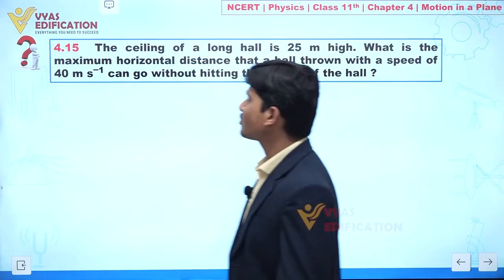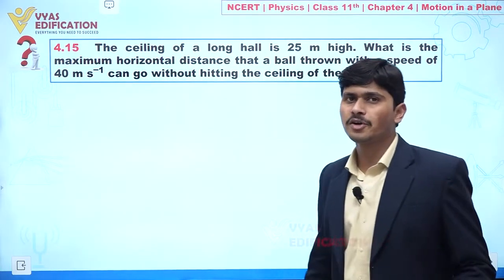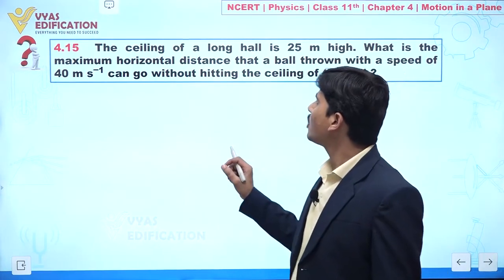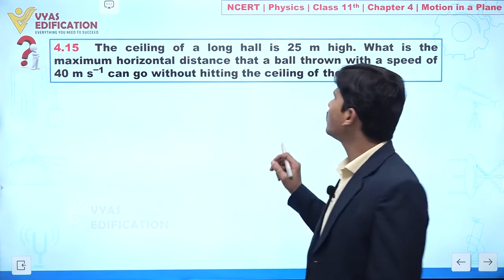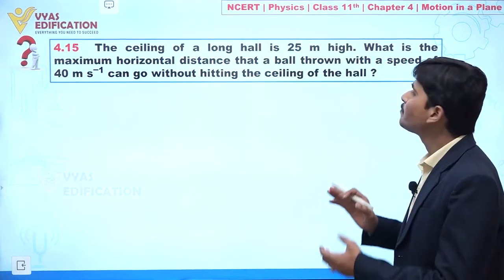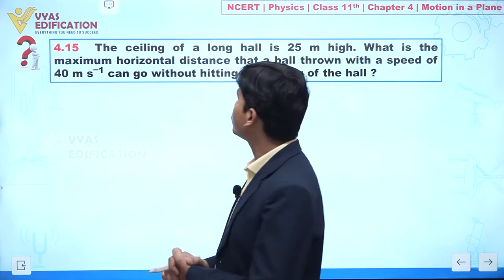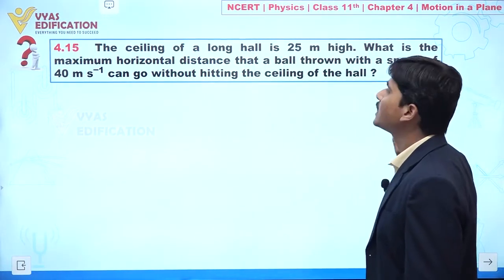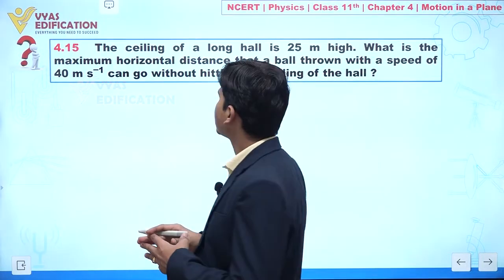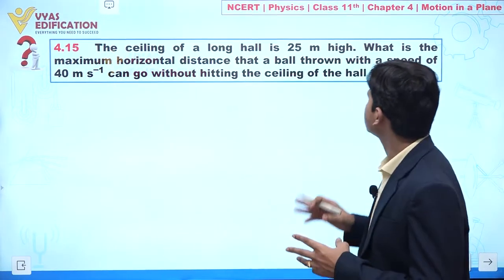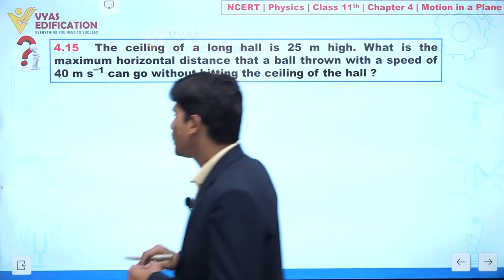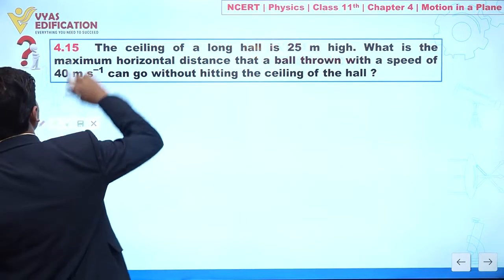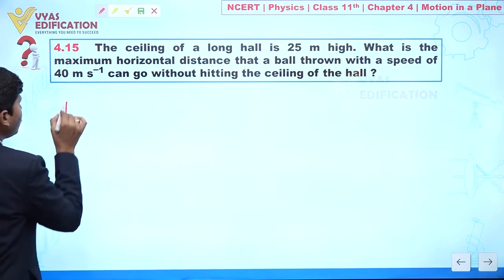We are going to discuss question number 4.15. In this question, the ceiling of a long hall is 25 meters high. What is the maximum horizontal distance that a ball thrown with a speed of 40 meters per second can go without hitting the ceiling of the hall? Let us try to analyze this given situation.